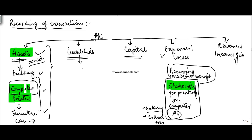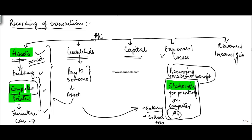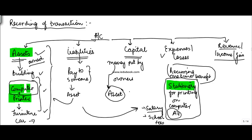Liabilities is anything which you have to pay to someone. This payment could be for purchase of an asset or purchase of an item which is an expense. Anything payable to an outsider is called a liability. Capital is the money put in by the owners — this could be money or an asset, which is called capital in kind.